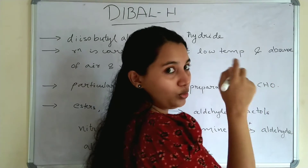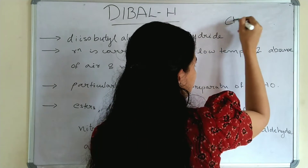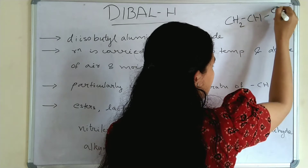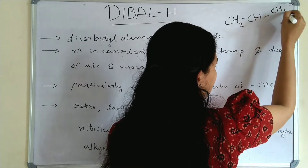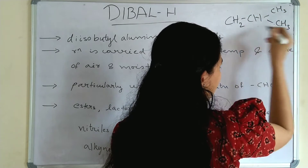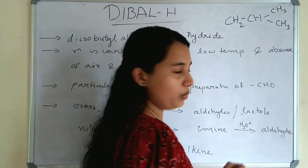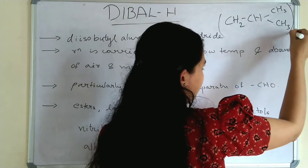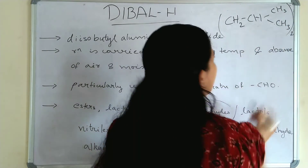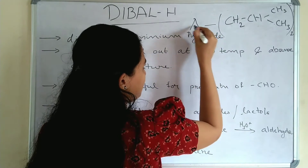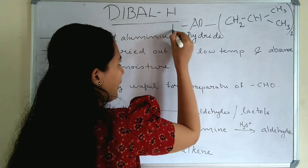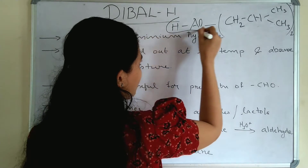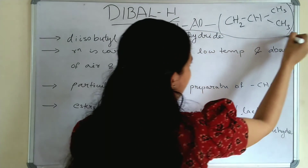Di-isobutyl. Isobutyl is CH₂, CH, CH₃ and CH₃ — that is isobutyl. Di-isobutyl aluminium and a hydride H. So this is the structure of DIBAL-H: aluminium with two isobutyl groups and one hydride hydrogen.